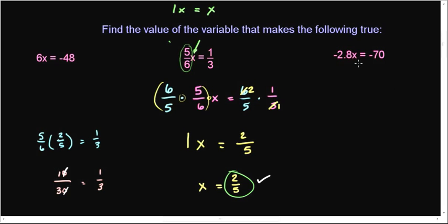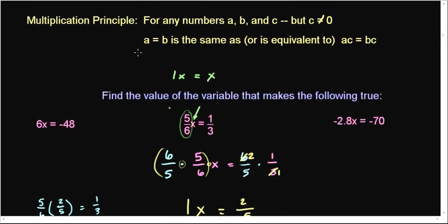So that one's done. On this third one here, again, even though it's negative and it's a decimal, it's okay. It goes by the same fundamental principle, that multiplication principle. It never said what A and B had to look like. Just that they're numbers. Okay, well guess what negative 2.8 is? A number.